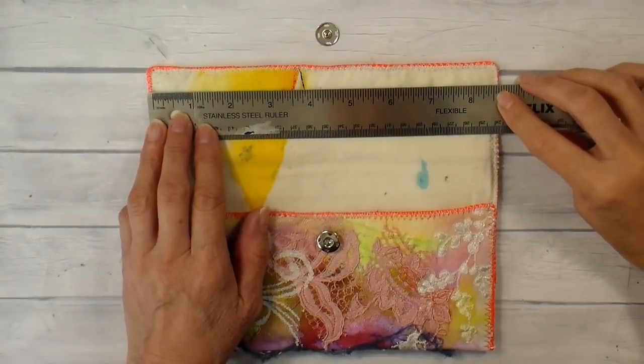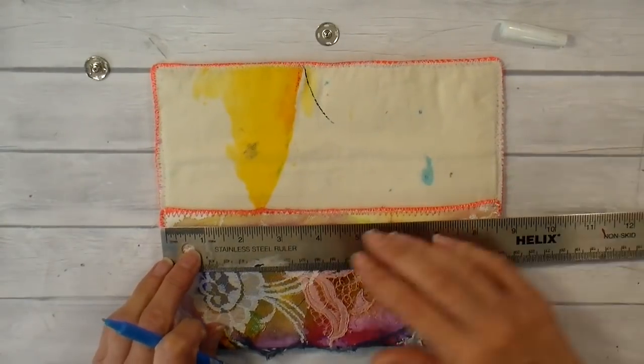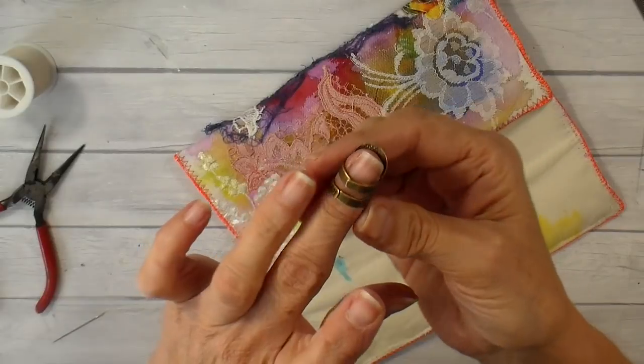I'm just going to take my little ruler and I'm going to measure right in the center so I get those snaps put in the right spot.